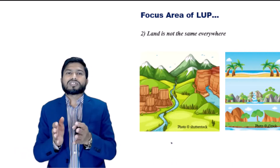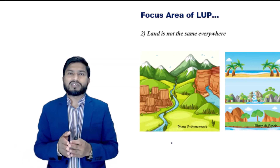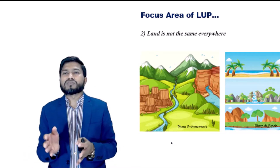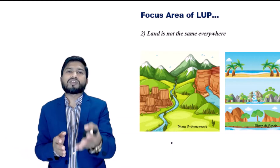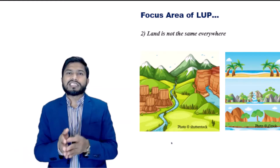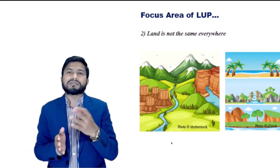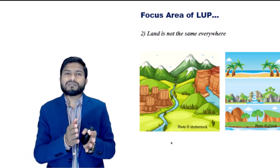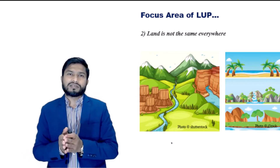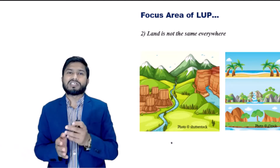The concept 'land is not seen everywhere' is the second focus area of land use planning. Capital, labor, management skills and technology can be moved to everywhere they are needed. Land cannot be moved, and different areas have different opportunities and different management problems. For example, this hazardous area needs specific management. Good information about land resources is therefore essential in land use planning.